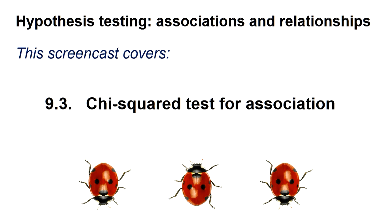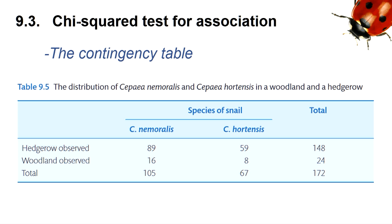A chi-squared test for association is performed when you are looking for an association between two factors that both have distinct categories. In our example, the factors are species and location, and each has two categories. The former, the observed snail, is either C. nemeralis or C. hortensis.